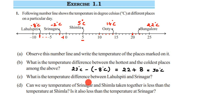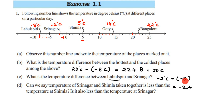The next question asks: what is the temperature difference between Lahuspith and Srinagar? We take Srinagar's temperature first, which is minus 2 degrees Celsius, then minus Lahuspith's temperature, which is minus 8. So it is minus 2 minus (minus 8). The subtraction becomes addition and we take the additive inverse of minus 8, which is plus 8. So minus 2 plus 8 equals 6 degrees Celsius.